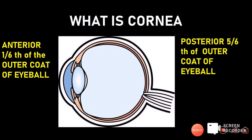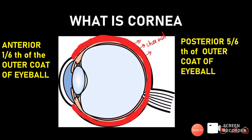Let us understand what the cornea is anatomically. Our eyeball is covered by three main coats: the outer fibrous coat, the middle vascular coat called the choroid, and the innermost coat — the nervous coat, also called the retina. The posterior five-sixths of the outer coat forms the sclera, and the anterior one-sixth of the outer coat forms our cornea.